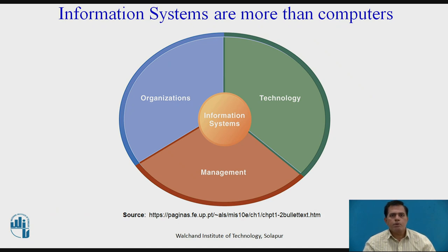This diagram shows that information systems are more than computers because they divide into three factors: organization, technology, and management. The centralized information system uses all these components to provide information to the business, to the people, and to the external environment. Organizations use people for generating different kinds of information; technology supports the generation of information systems; and management takes decisions on whether to provide useful information to business people.